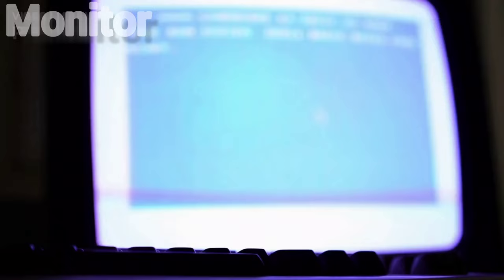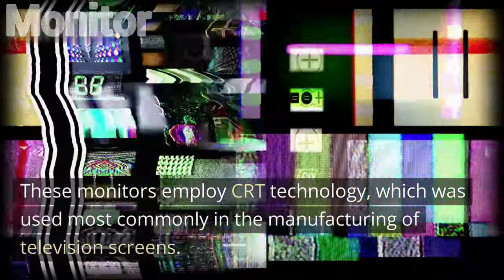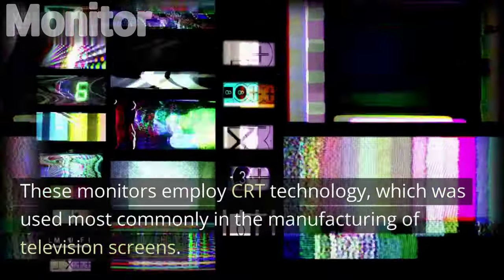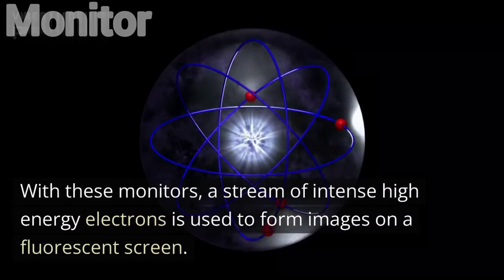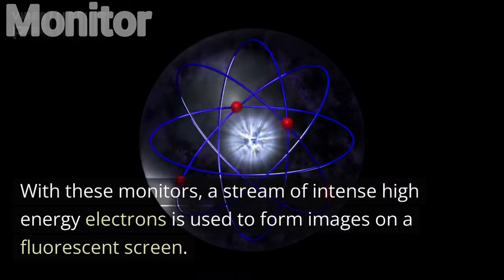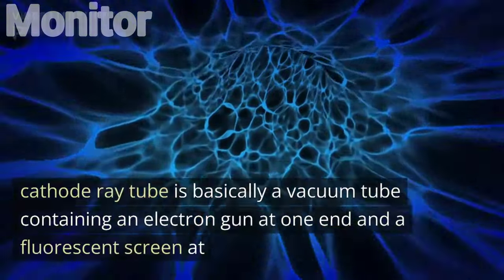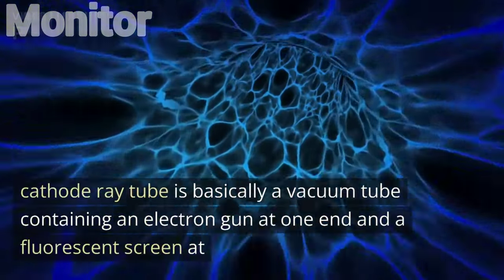CRT (Cathode Ray Tube) monitors employ CRT technology, which was most commonly used in the manufacturing of television screens. With these monitors, a stream of intense high-energy electrons is used to form images on a fluorescent screen. A cathode ray tube is basically a vacuum tube containing an electron gun at one end and the fluorescent screen at another end.